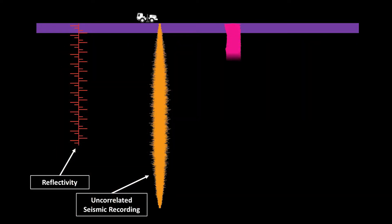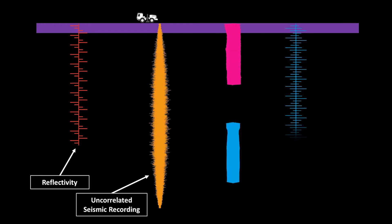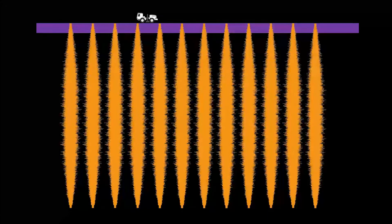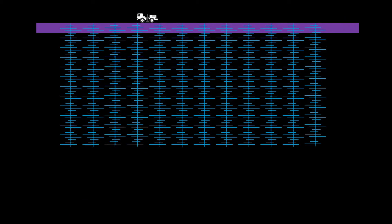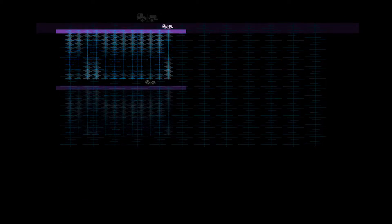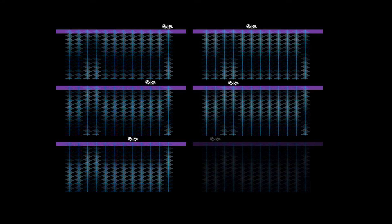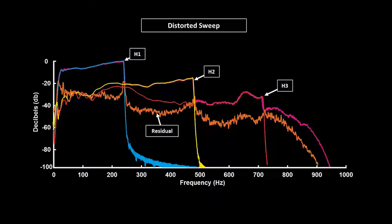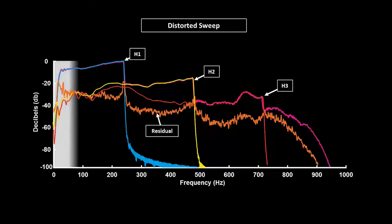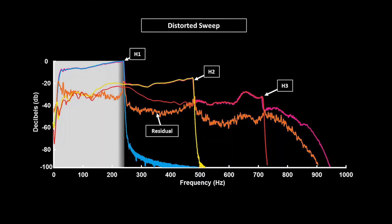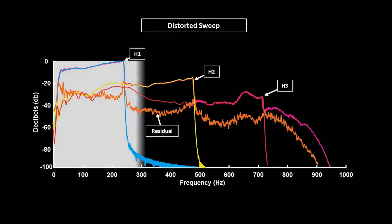During correlation, processors generally use the ground force or the pilot signal as the correlation operator. The end result is a correlated seismic trace. Repeating the correlation process for each trace results in trace data which is now ready for processing. The correlation process is repeated for every shot point in the survey. Traditionally, the correlation process will harness frequency content within the fundamental limits. However, with precisely extracted harmonics used as correlation operators, we should be able to extend our seismic bandwidth.